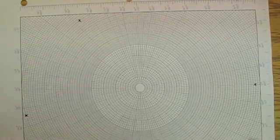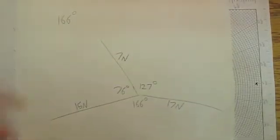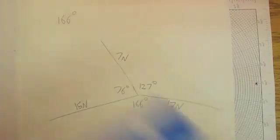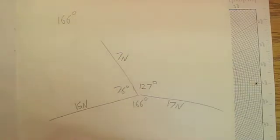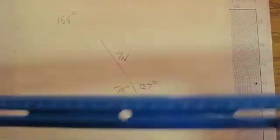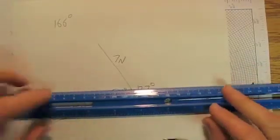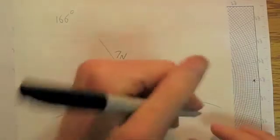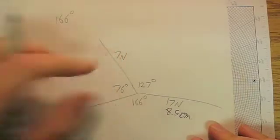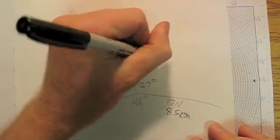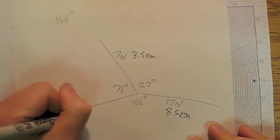Now to make it a scale diagram, what I have to do is translate these into distances. And so I'm going to say that one centimeter per newton is going to be a little bit big. So let's make it half of that. So 17 is going to be 8.5 centimeters, 7 newtons is going to be 3.5 centimeters.